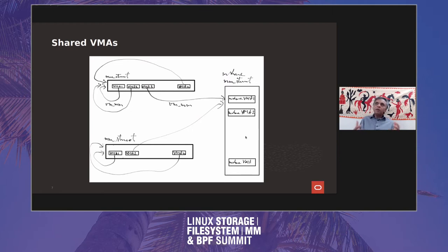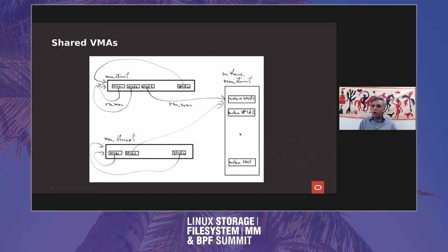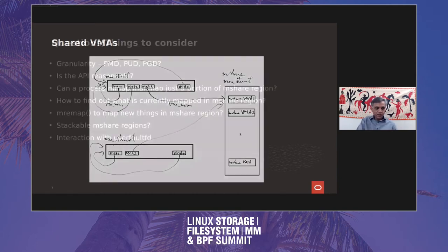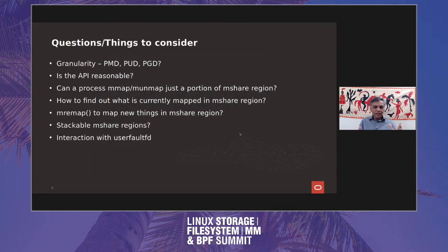So I have a picture — you have a process with its own MM struct, it has a bunch of VMAs, each VMA has its VM MM pointer pointing back to its own MM struct, except for the VMA that maps onto the M-Share region, which has its VM MM pointing to the MM struct for the M-Share region as well as the VM_SHARE_PT flag set on it. When a page fault occurs, we look up the VMA where the page fault occurred, and if the VM_SHARE_PT flag is set, we know it's an M-Share region, so we go to the M-Share MM struct instead and continue page fault handling from there, bringing in all the page tables from the shared region.